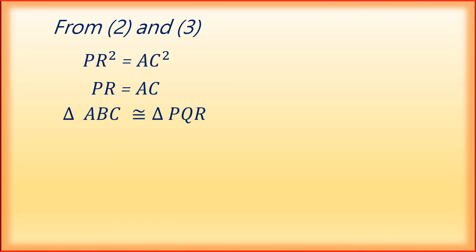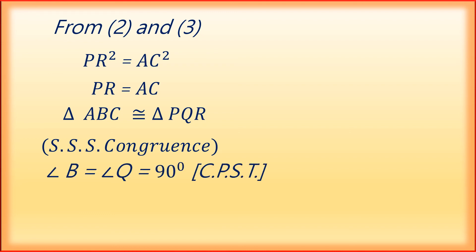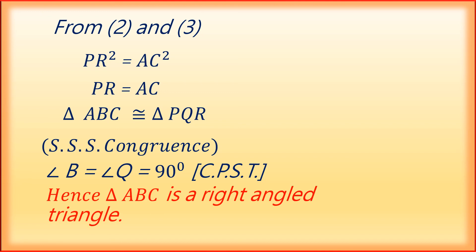Therefore, triangle ABC is congruent to triangle PQR by SSS congruency. So angle B is equal to angle Q, which equals 90 degrees, by CPST — Corresponding Parts of Similar Triangles. Hence, triangle ABC is a right-angled triangle.